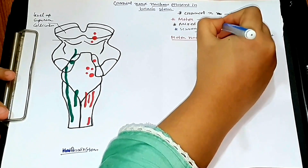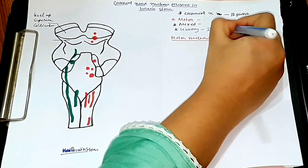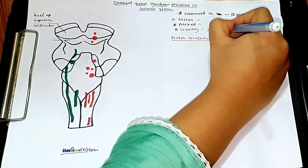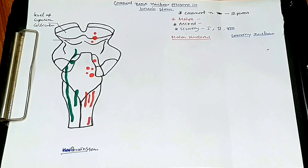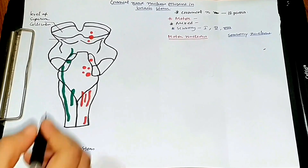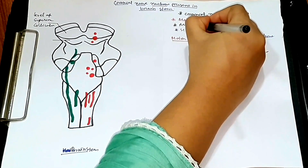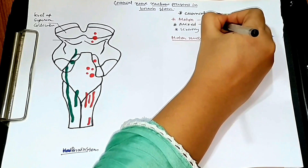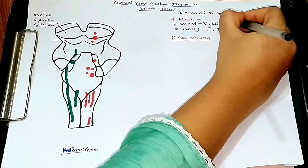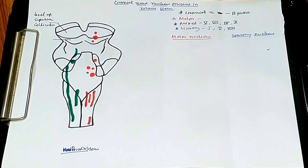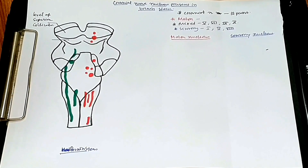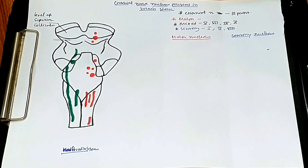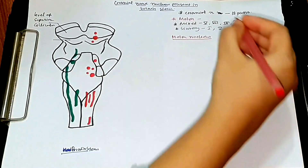Sensory cranial nerves are number one, number two, and number eight. The mixed cranial nerves are 5, 7, 9, and 10. The remaining cranial nerves are motor nerves.